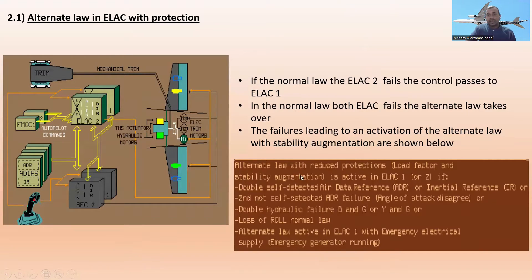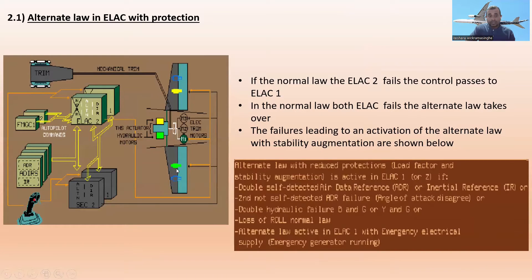The alternate law with reduced protection — load factor and stability augmentation — is active in ELAC 1 or 2 if: double self-detected Air Data Reference (ADR) failure, or second not-self-detected ADR failure (angle of attack), or double hydraulic failure (blue and green, or yellow and green), or loss of normal law, or alternate law active in ELAC 1 with emergency electrical supply.